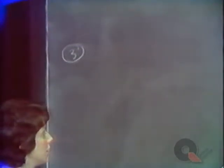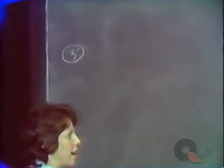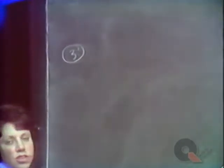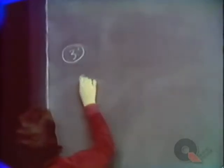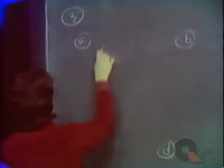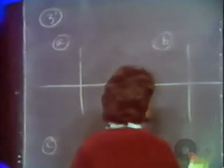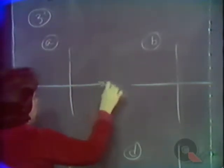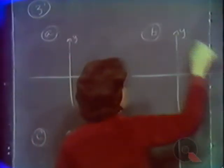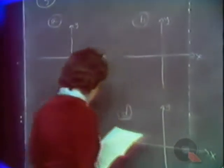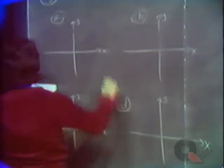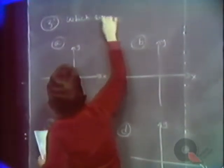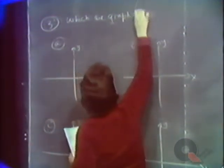Now I'm going to draw some curves on the board, and we're going to try to figure out whether or not these are pictures of functions of x — whether these are graphs of functions. Let's say here's A, B, C, and D — I'll give you four of them. I'll label the axes. We want to know which are graphs of functions.